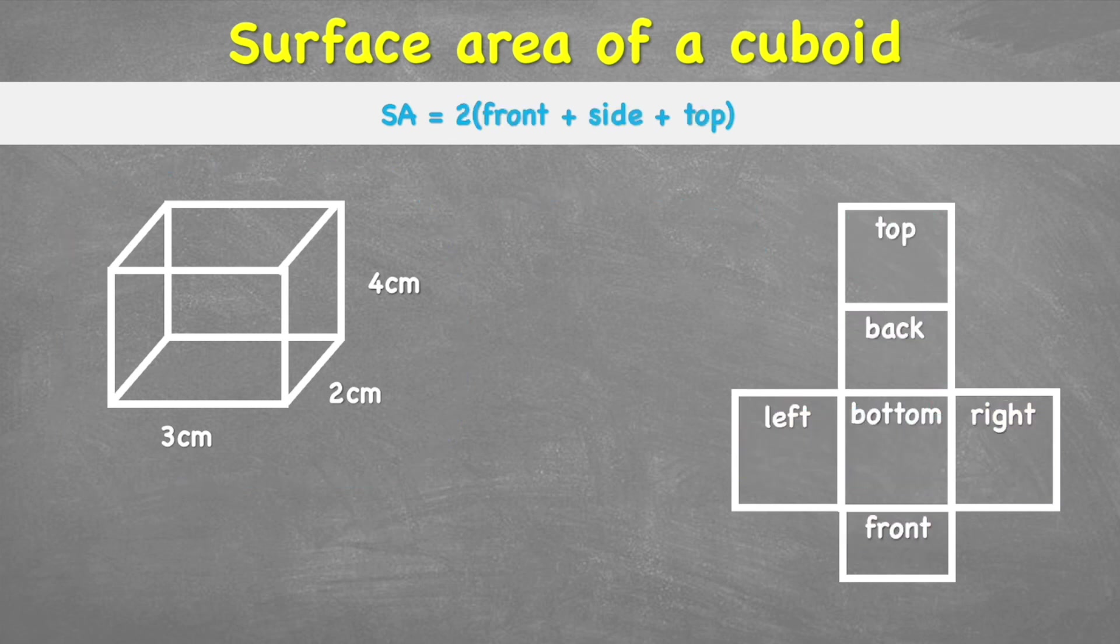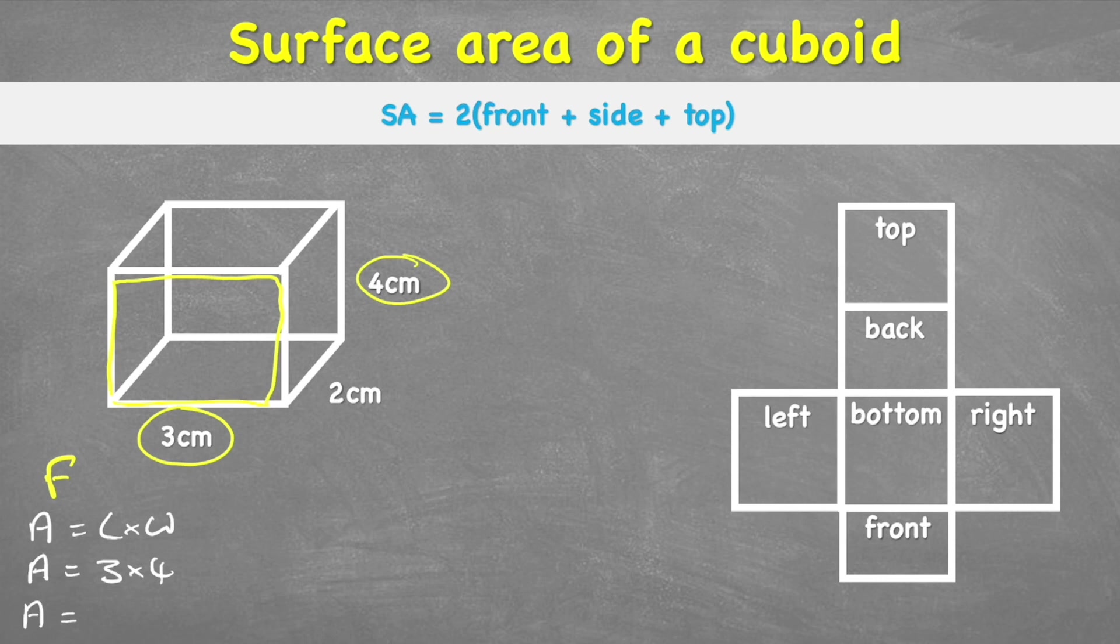So let's do that then. Let's start by working out the area for the front, which is this rectangle here. And we can see that we have measurements 3cm and 4cm. And the formula to work out any rectangle is length times width. So we will put area equals length times width, which is therefore area equals 3 times 4. And so we can see area equals 12cm.